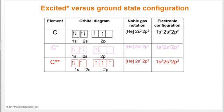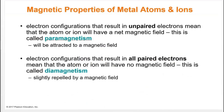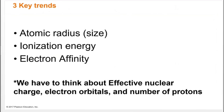Electrons can be excited with energy and move into a different orbital. This gives us the properties of paramagnetism and diamagnetism, covered more in chapter 11. Paramagnetism means you have at least one unpaired electron; diamagnetism means all electrons are paired.